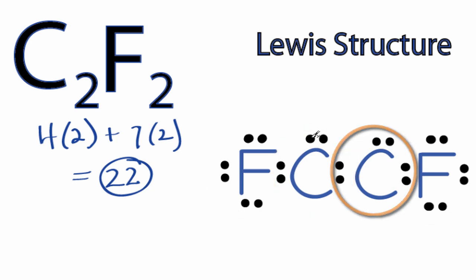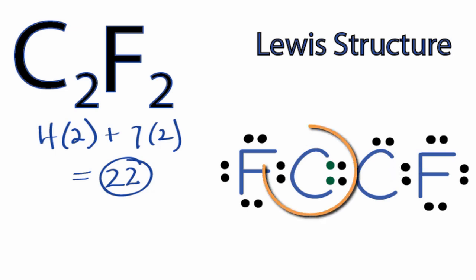We can take two valence electrons here from the carbon and put them between the two carbons to form a double bond. When we do that, this carbon now has six valence electrons, so we're almost there to an octet. Let's take two more from here and share them to form a triple bond.